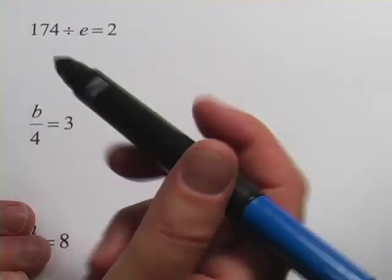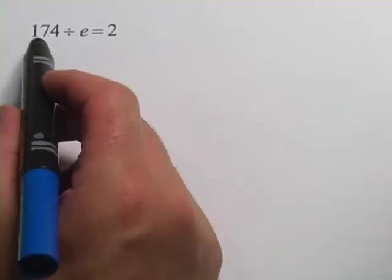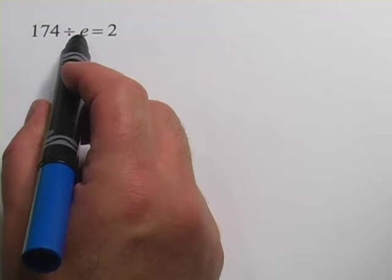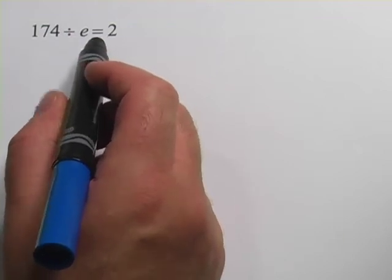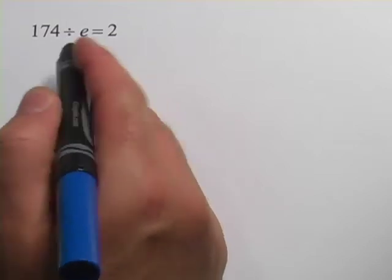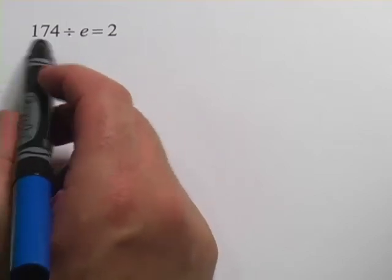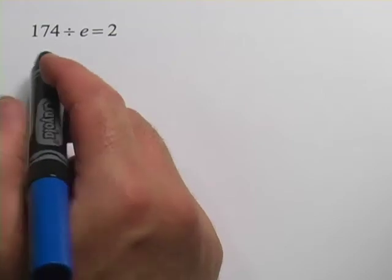Let's look at another one. This one says 174 divided by e equals 2. So to solve for e, well this one's a little bit funny because it's not e divided by something, it's something divided by e.